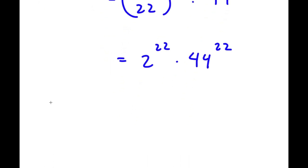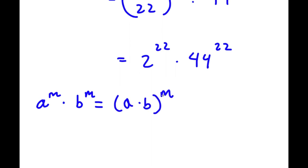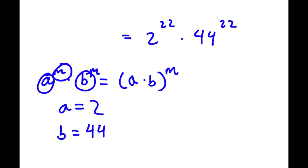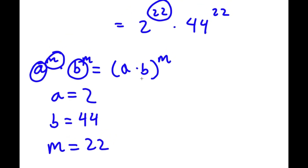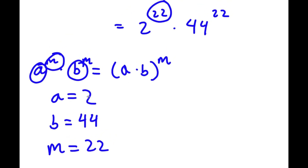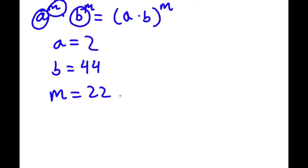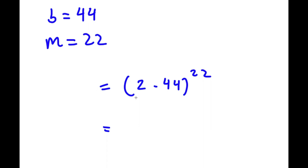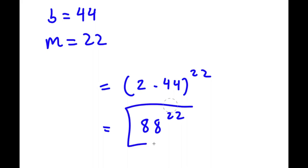If I have something in the form a to the power of m times b to the power of m, this is simply equal to a times b to the power of m. So in this case, we have 2 to the power of 22 times 44 to the power of 22, where a is 2, b is 44, and m is 22. So this is going to equal 2 times 44 to the power of 22. Now 2 times 44 is simply equal to 88, so now I have 88 to the power of 22. So this is my answer.